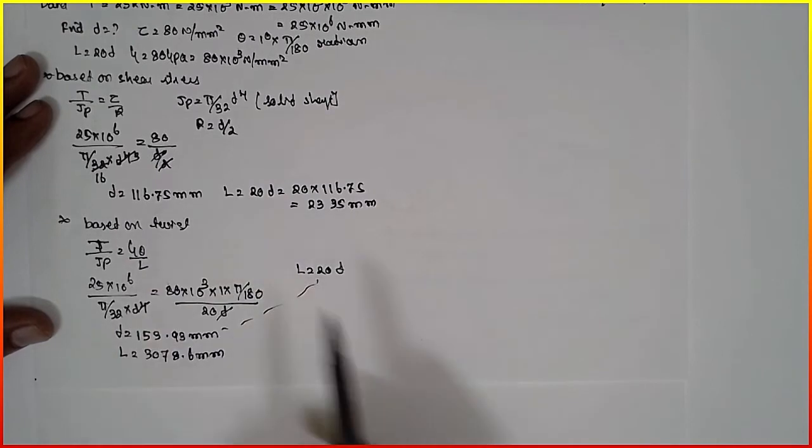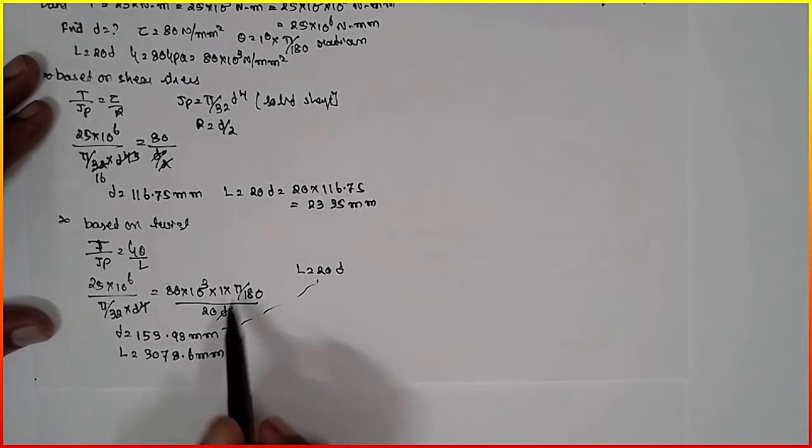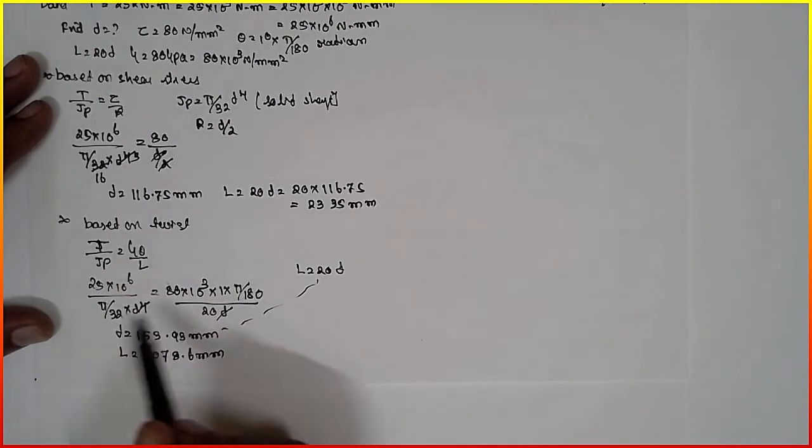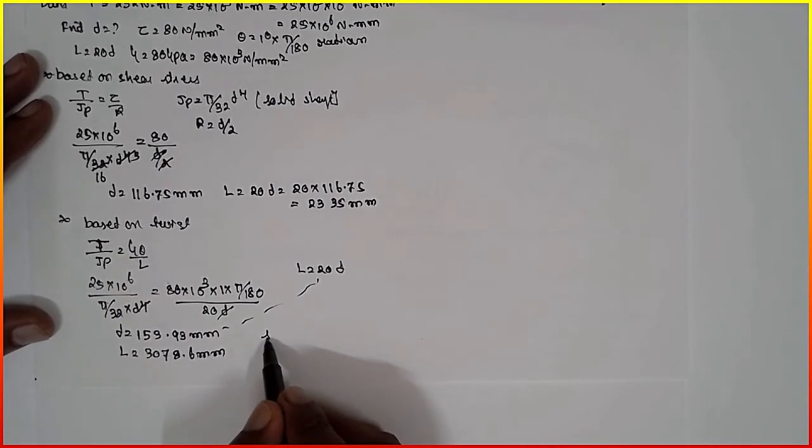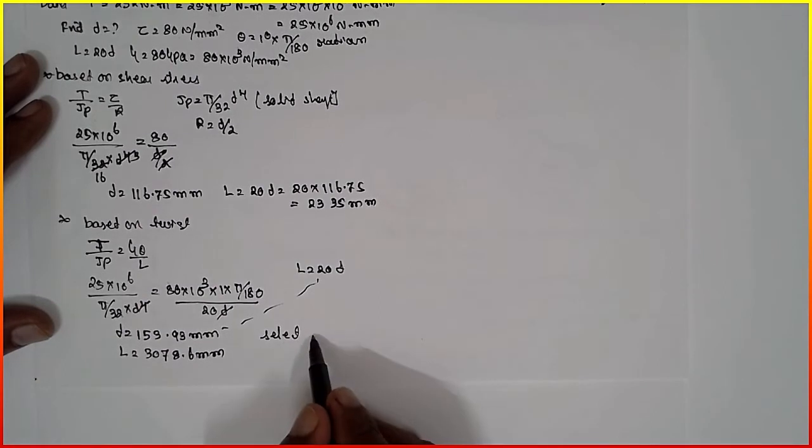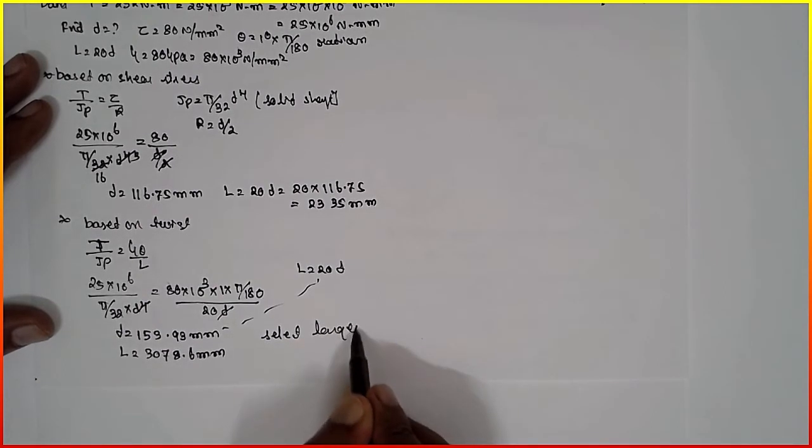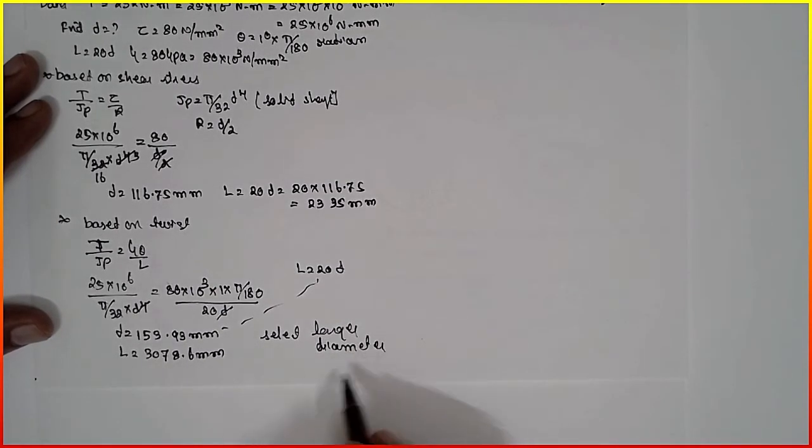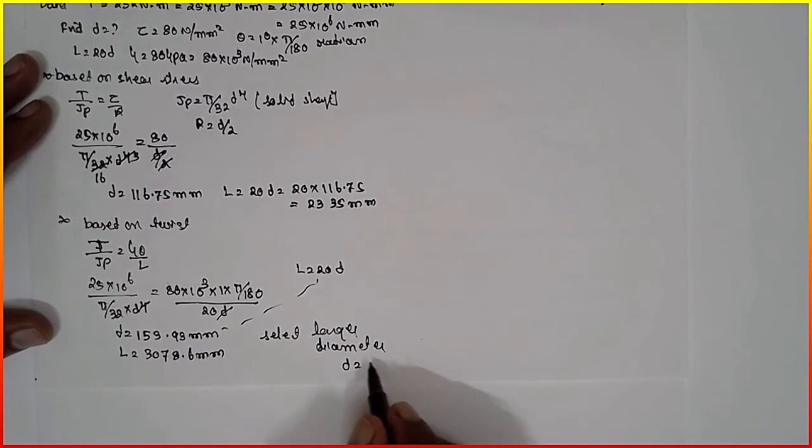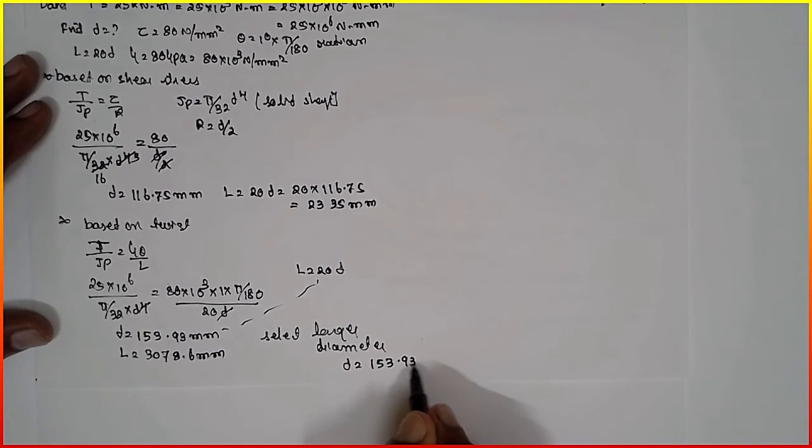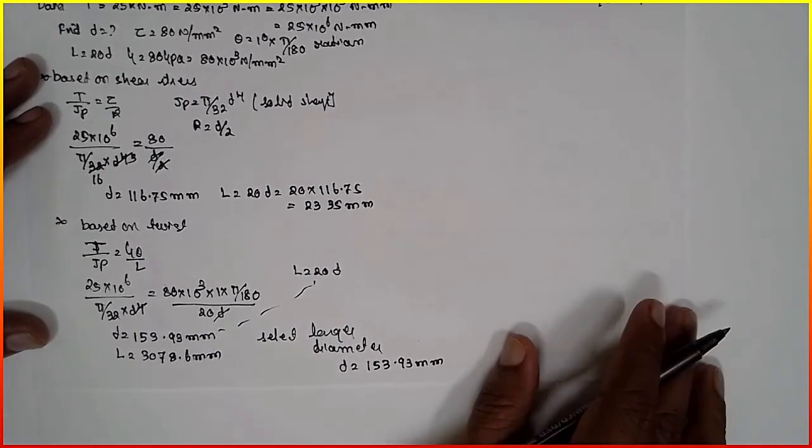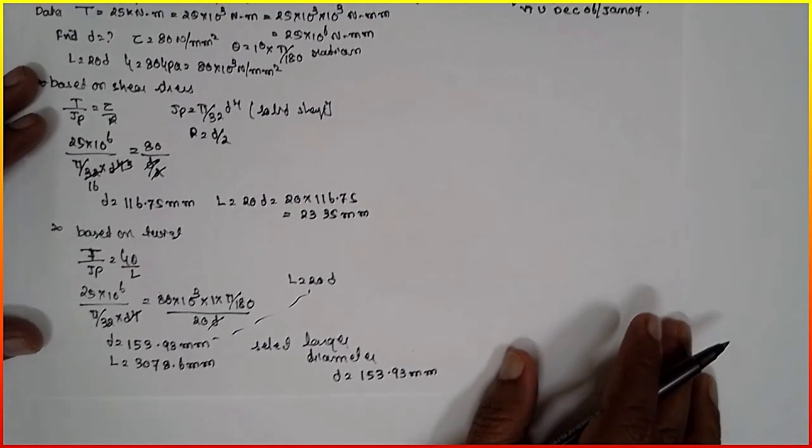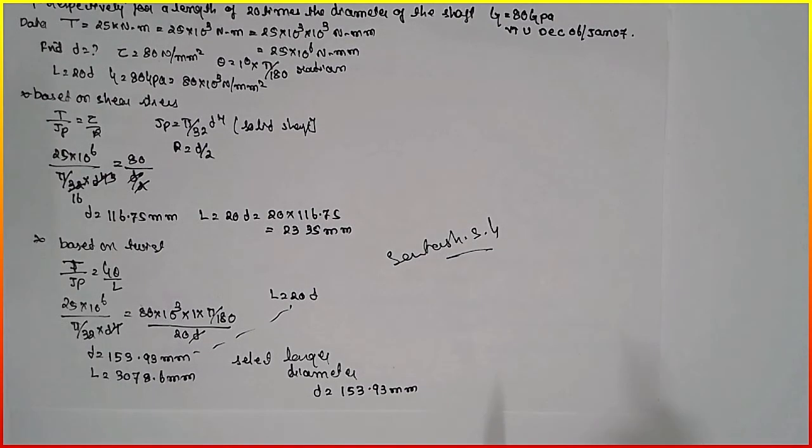Now the diameter 153.93 is larger compared to 116.75. Therefore larger diameter has to be selected. Select larger diameter, that is D equals 153.93 mm. In this way you have to solve the problem. I am Santosh Gaidankar, thank you.